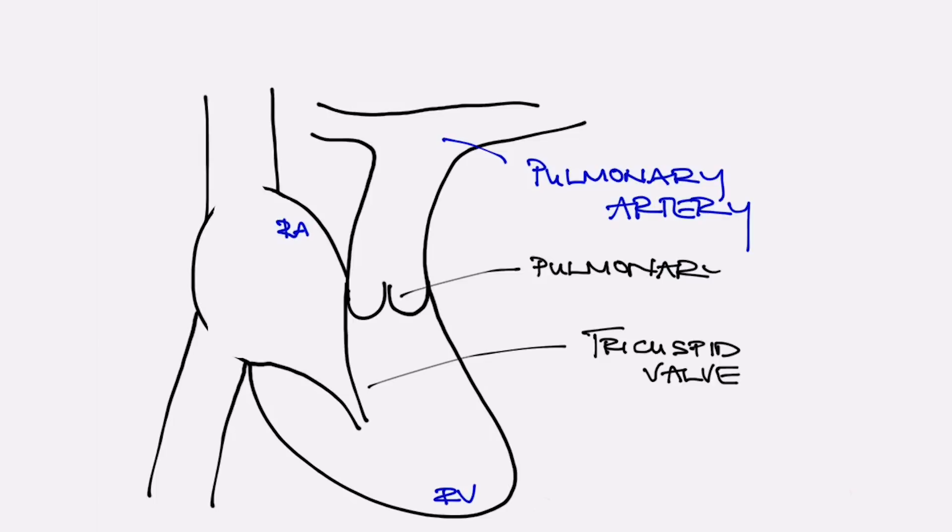The two valves on the right side are called tricuspid and pulmonary valve. All valves have names so that when health care providers speak with each other about a particular patient problem, we know exactly what that person is talking about.